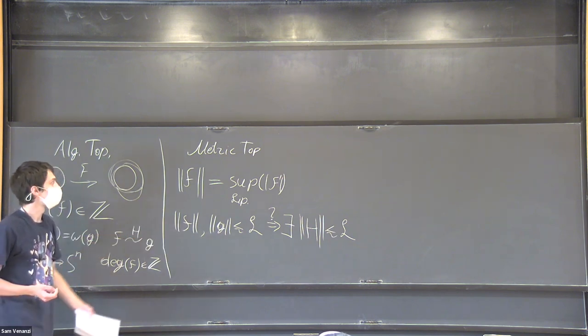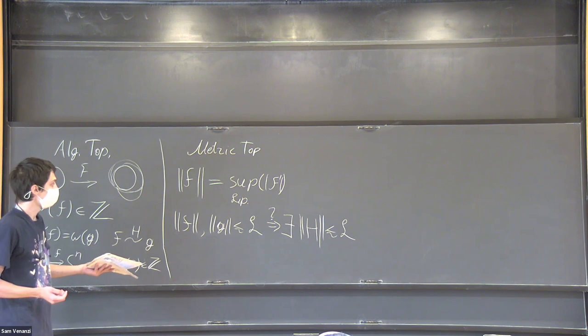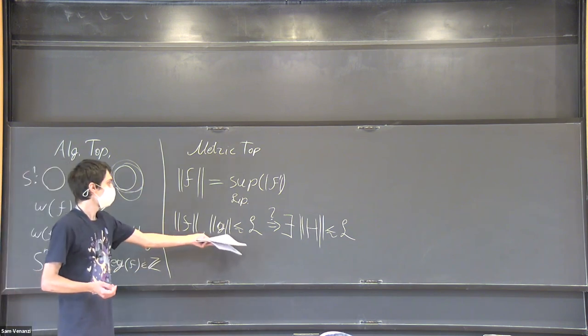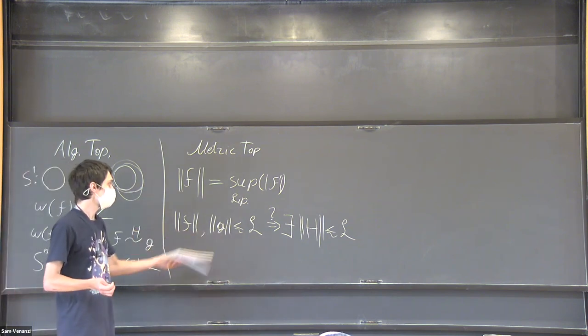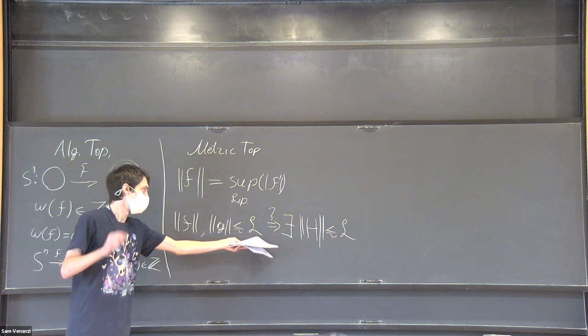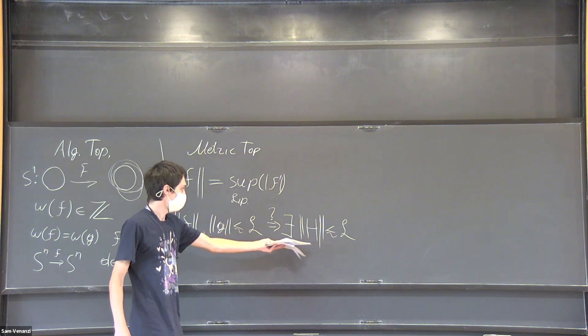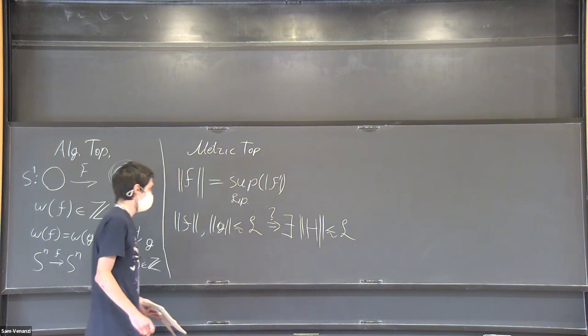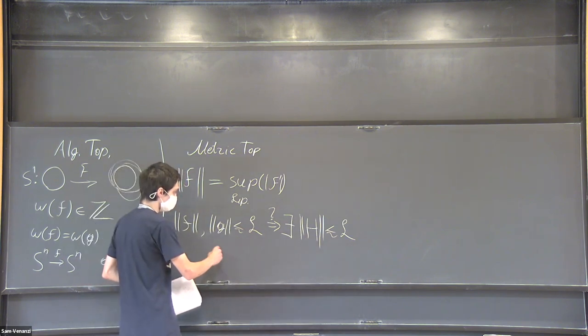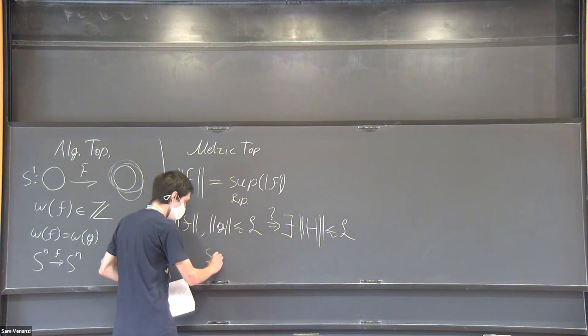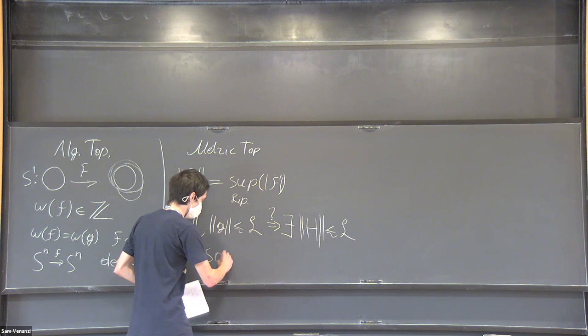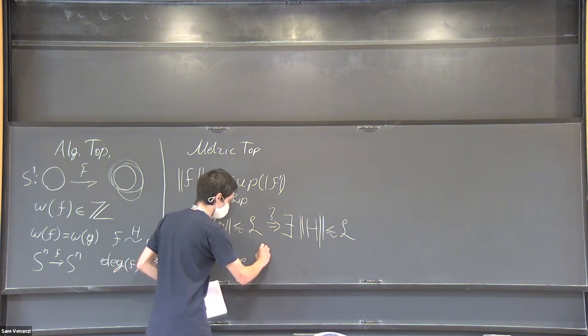What happens here on the metric side? Again, if we have two mappings that are homotopic to each other, we know their metric difficulty. How simple can we find the homotopy between them?